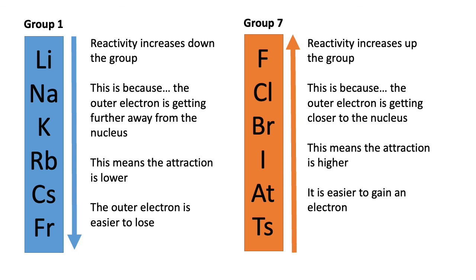Francium — or in practice caesium, because francium is radioactive and there are only a few atoms of it — at the bottom of group 1, the outer electron is further away from the nucleus and is more easily lost because the attraction is lower. Please pause the video and update your notes with the explanations and finished sentence starters.